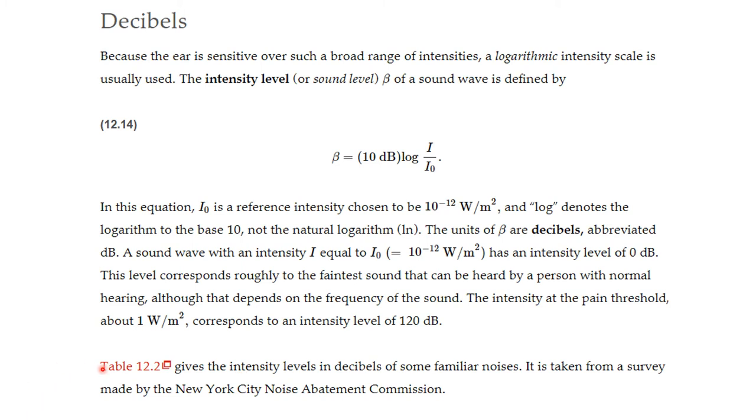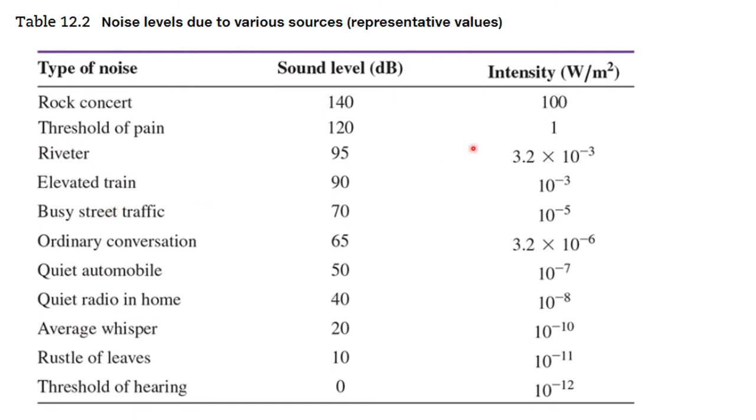The following table gives intensity levels in decibels of some familiar noises. It's taken from a survey made by some noise abatement commissions. So you see rock concerts are very high and very dangerous. This is the threshold of pain. This is a riveter. We have the rustle of leaves. Ordinary conversations. And down here is the threshold of hearing. And here are the sound levels in decibels.